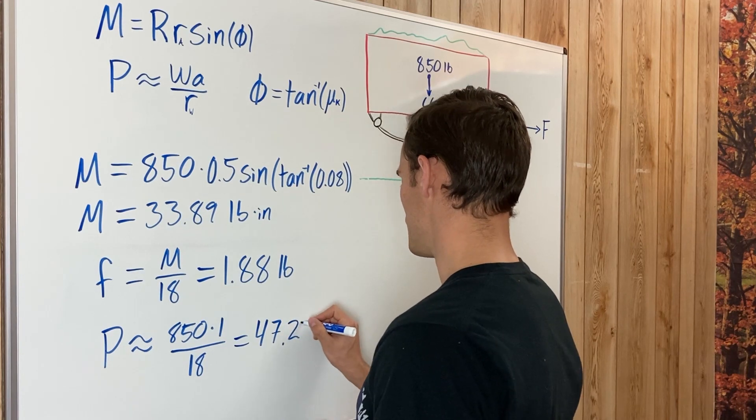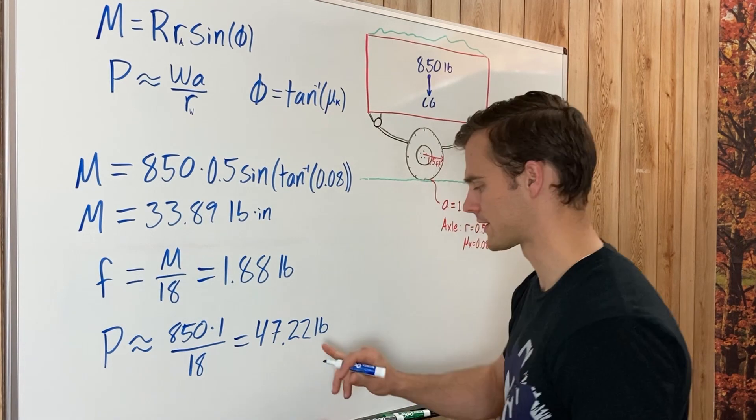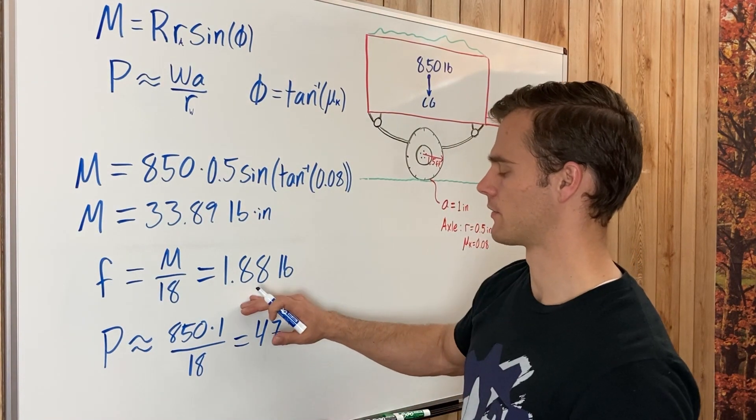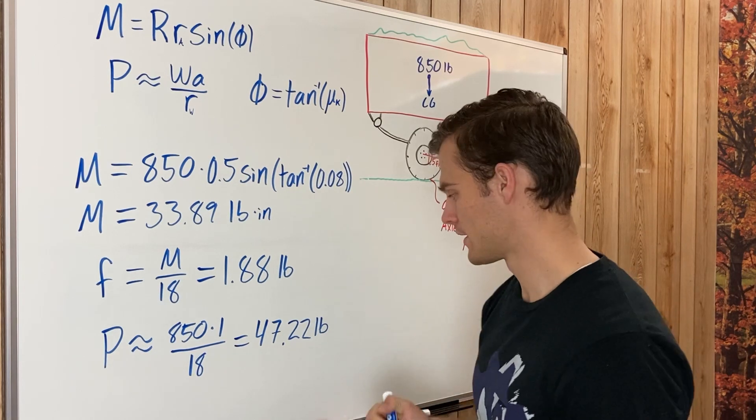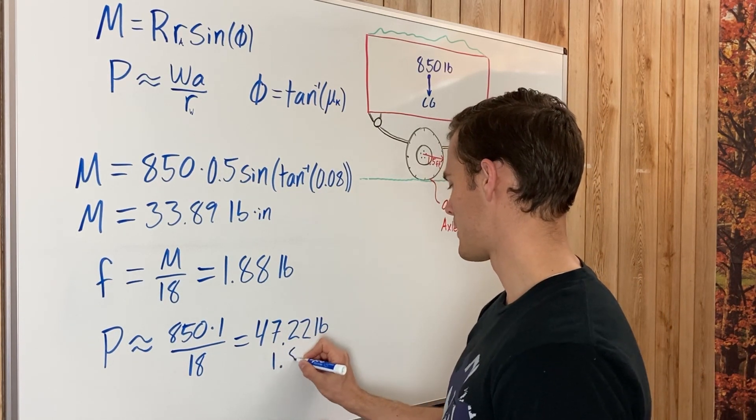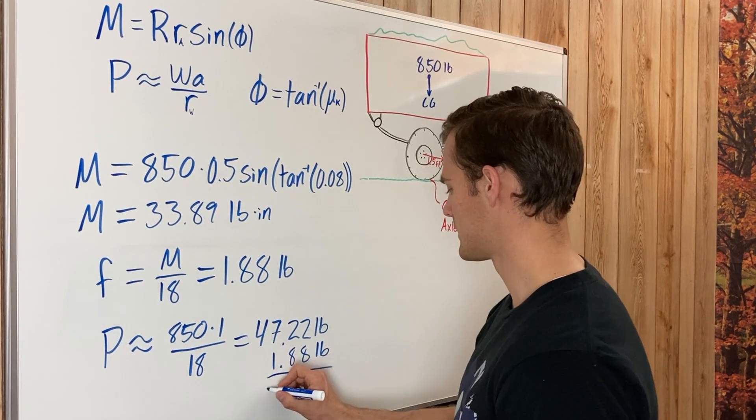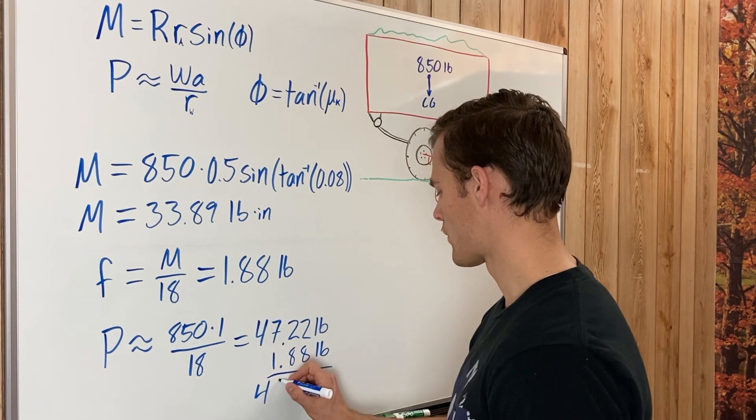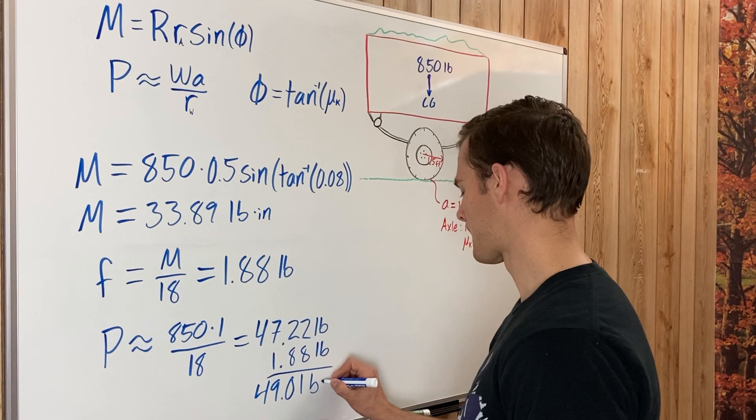Plug that into your calculator and you get that equals 47.22 pounds. So that's quite a bit more than the frictional forces in our journal bearings. So add those two up, add 1.88 onto that, and we get 49.01 pounds.